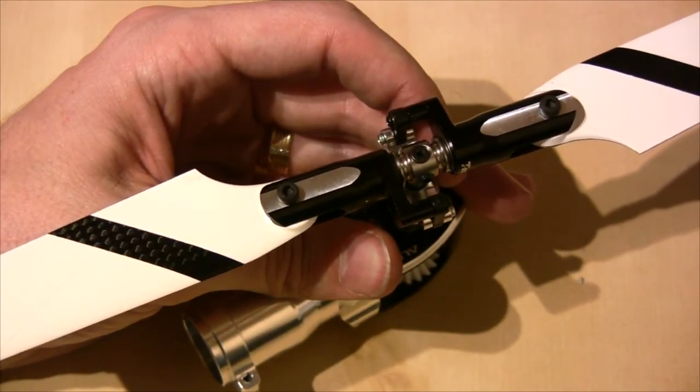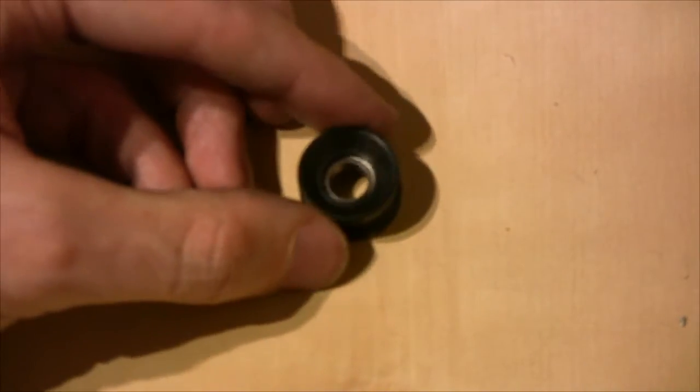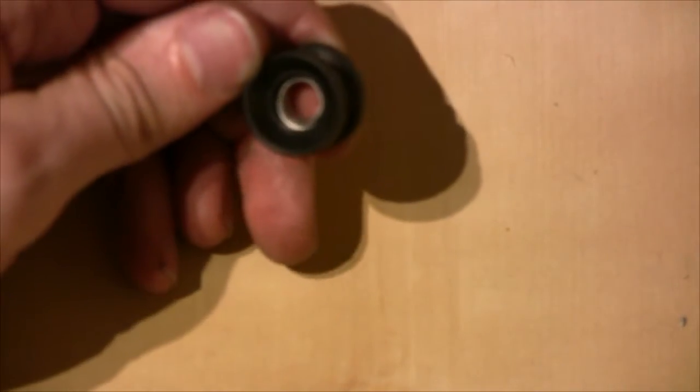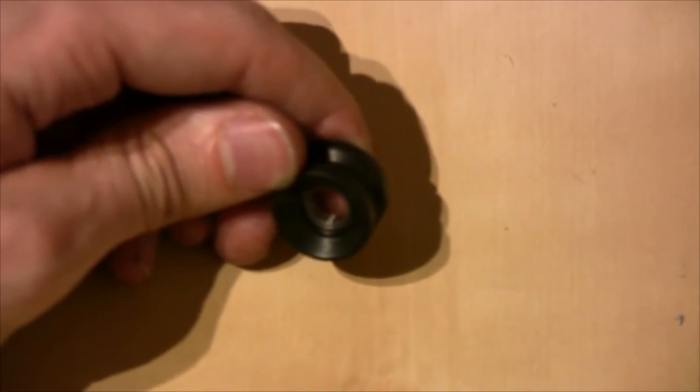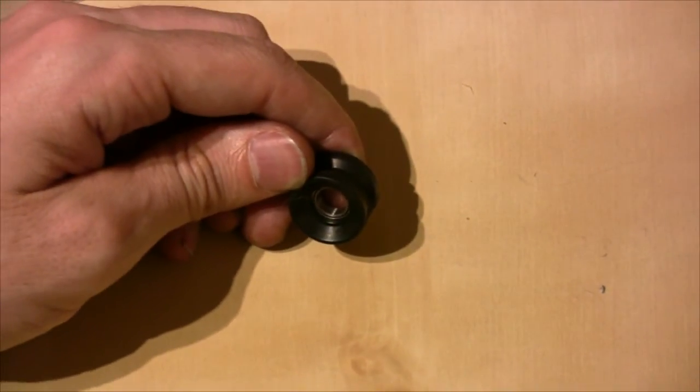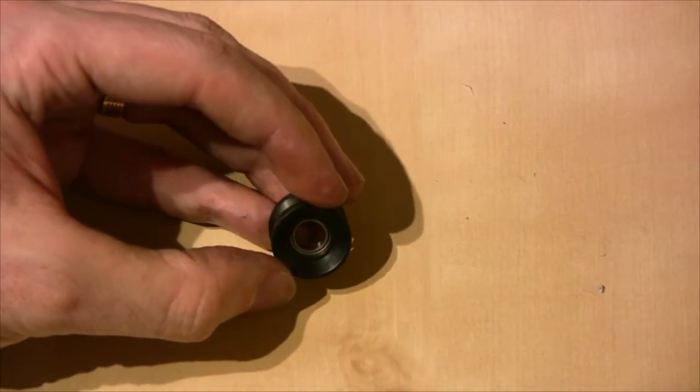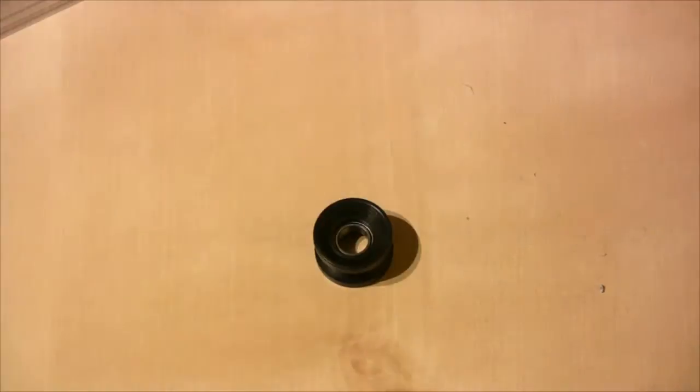For the torque tube, what I've just done is push the bearing inside of the little rubber for the torque tube. You can see the bearing inside the rubber there, and that's going to go onto the torque tube.